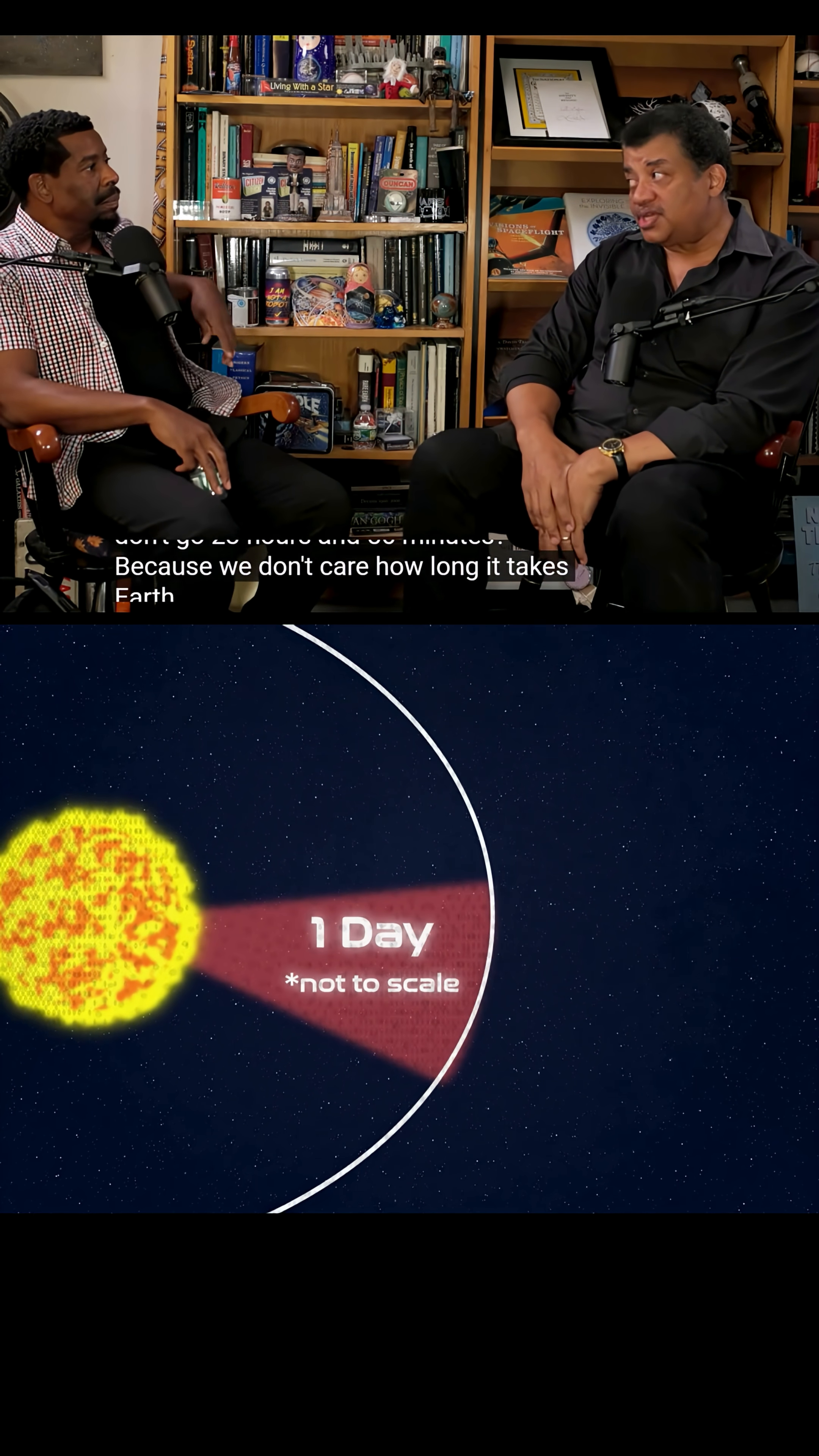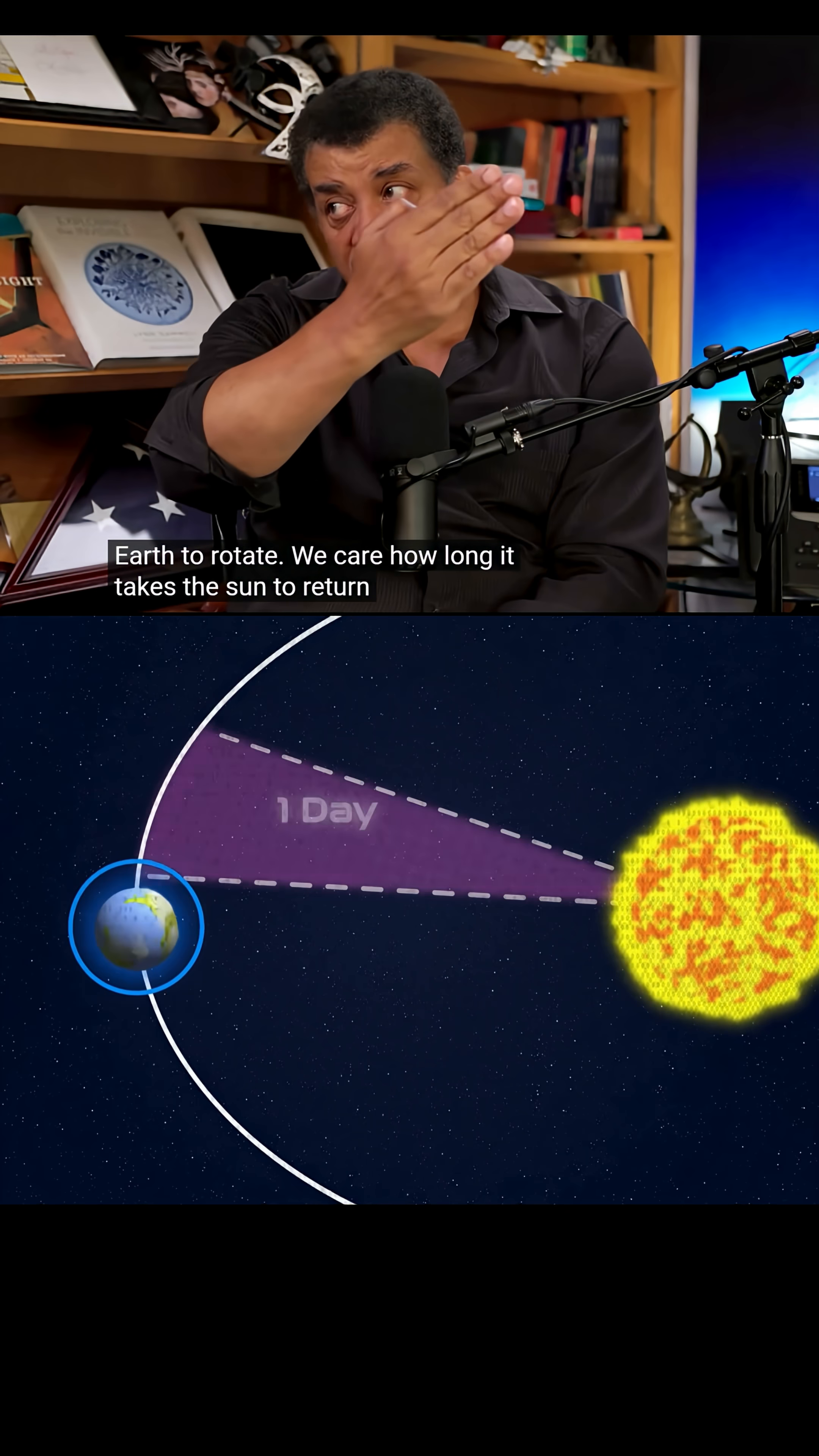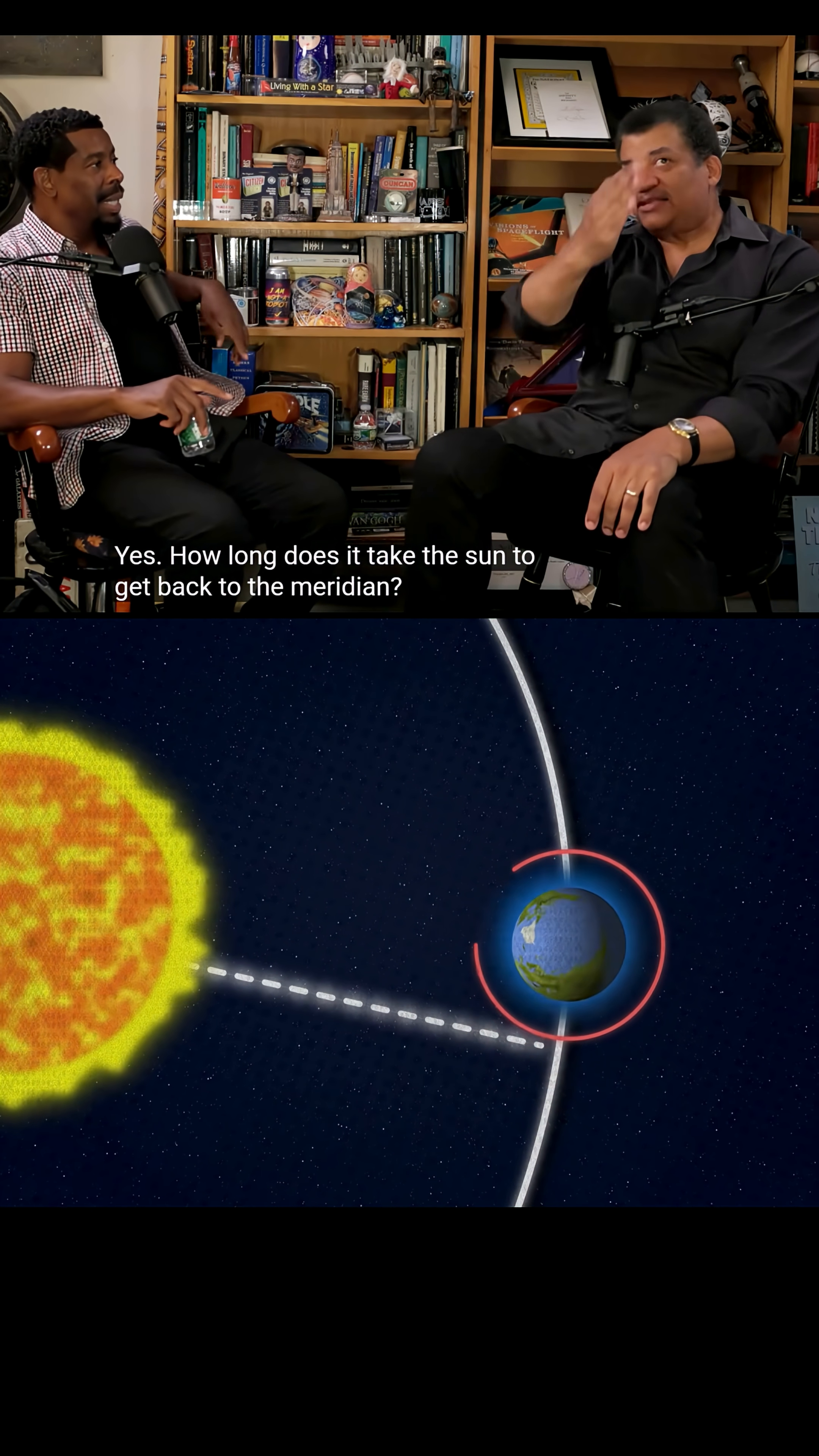Right, because we don't care how long it takes Earth to rotate. We care how long it takes the sun to return to its position in the sky because we're talking about the meridians. Yes, how long does it take the sun to get back to the meridian? That's 24 hours. Got it.